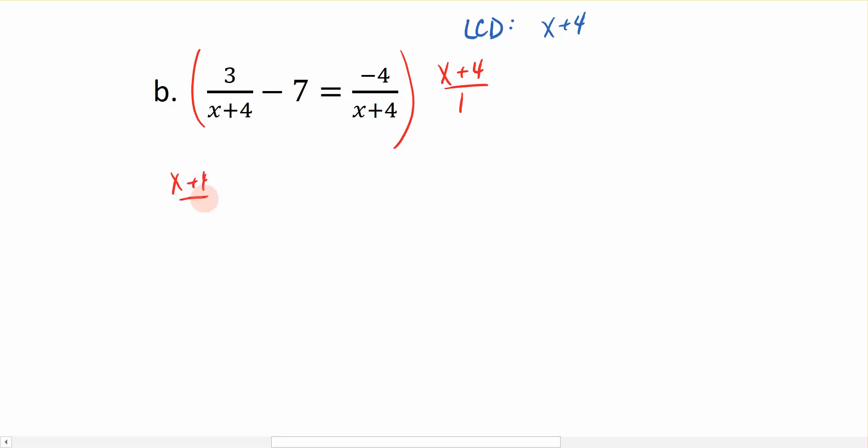We have x plus 4 over 1 times this first term 3 over x plus 4. Bring my minus sign down. Now I have x plus 4 times 7 equals—let me change that—x plus 4 over 1 times negative 4 over x plus 4. So even to this day, I still will write this step out as I'm working these just so I don't make a mistake.